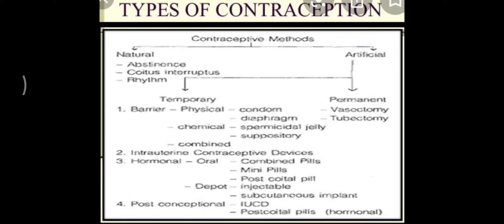Good morning. In our last session we started the next chapter, reproductive health, and began with contraception, discussing natural contraceptive methods. Today we are going to start with the artificial contraceptive methods, which are divided into two: temporary and permanent. We will initially take up the temporary method. The first temporary method includes barrier methods, also called physical or mechanical methods.